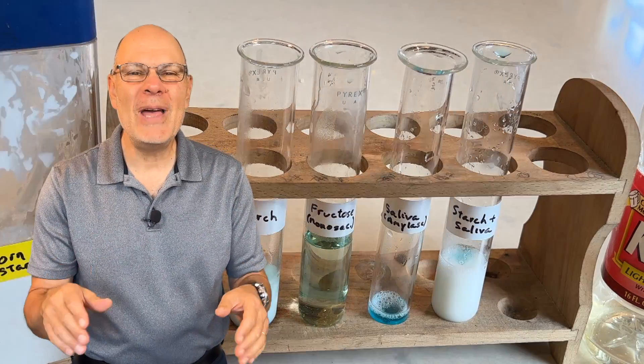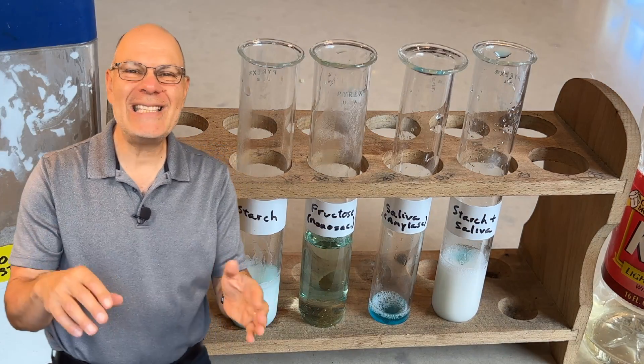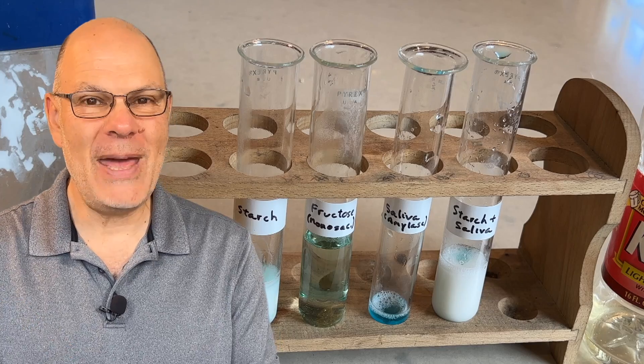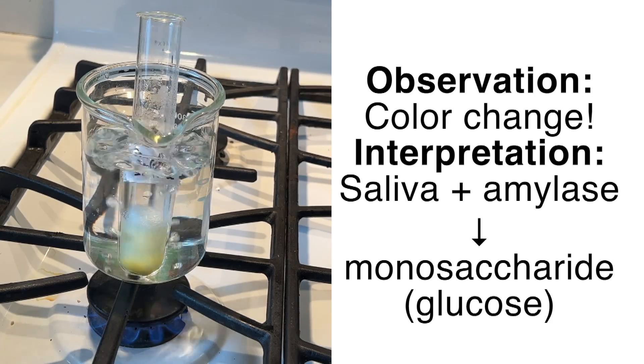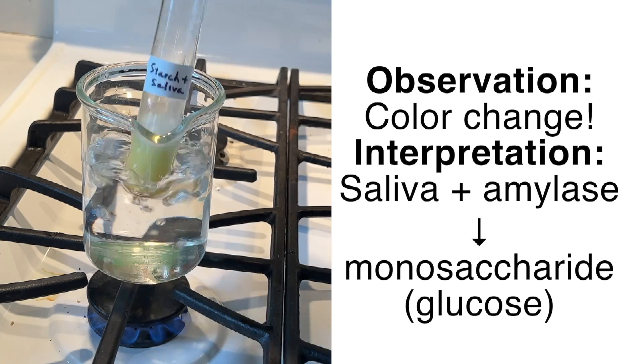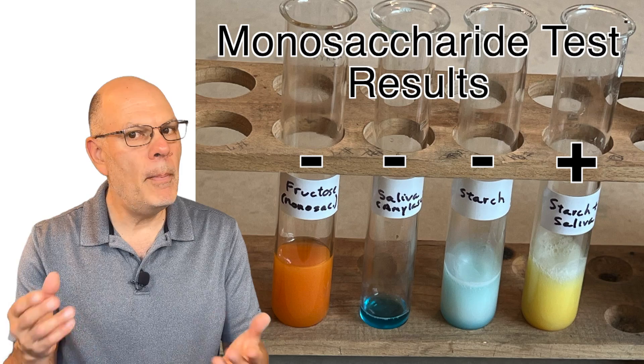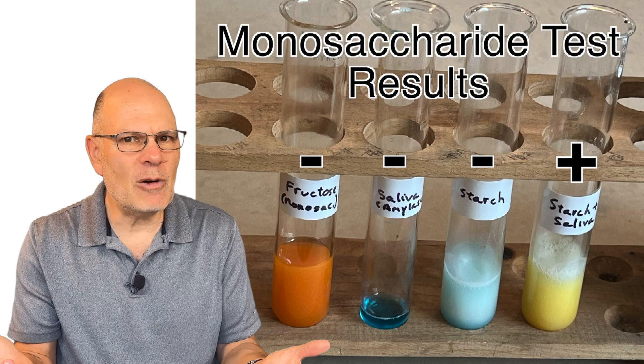And now for the moment we've been waiting for. Let's test the test tube that has a mixture of starch and saliva. We add the Benedict's. It's blue. We heat it up, and look, there's a color change that indicates the presence of a monosaccharide. But where did that monosaccharide come from?